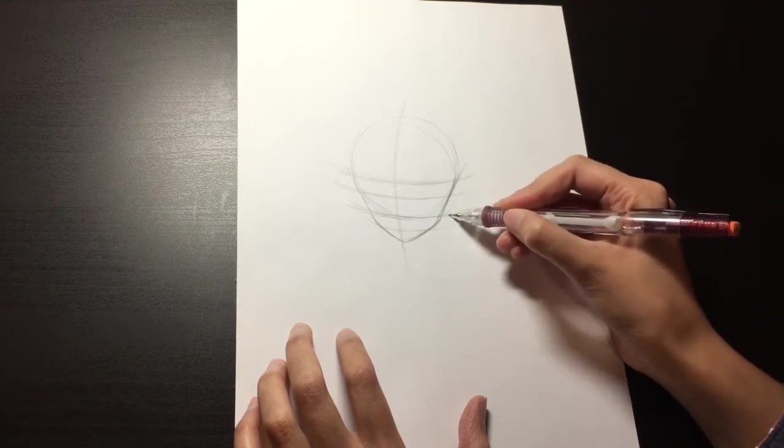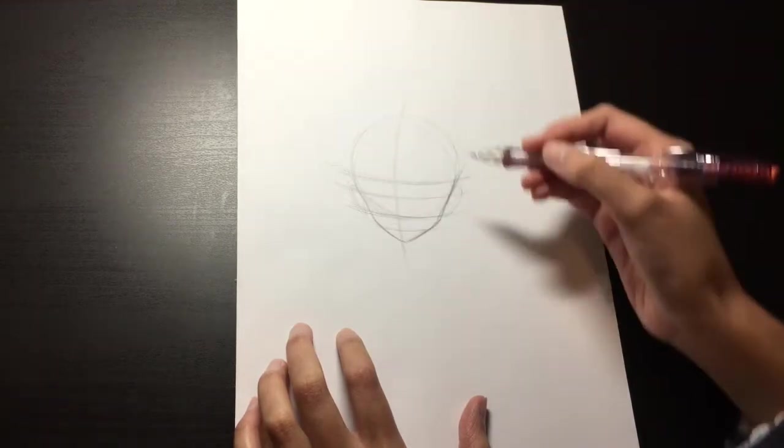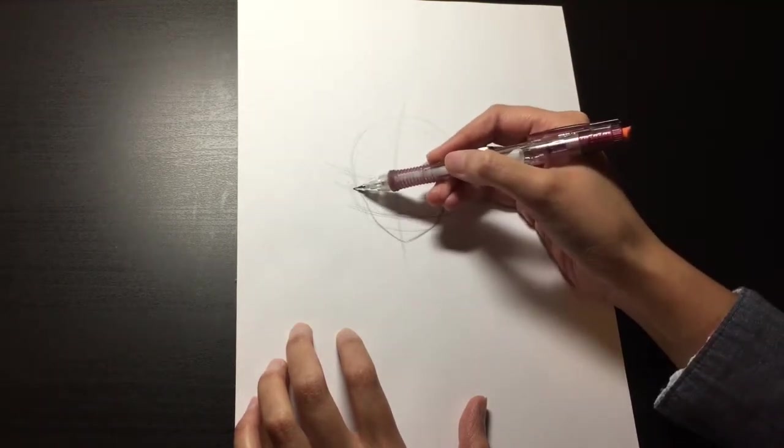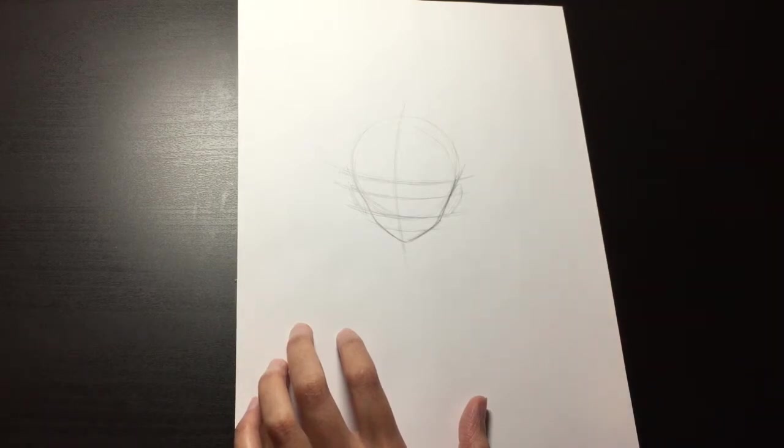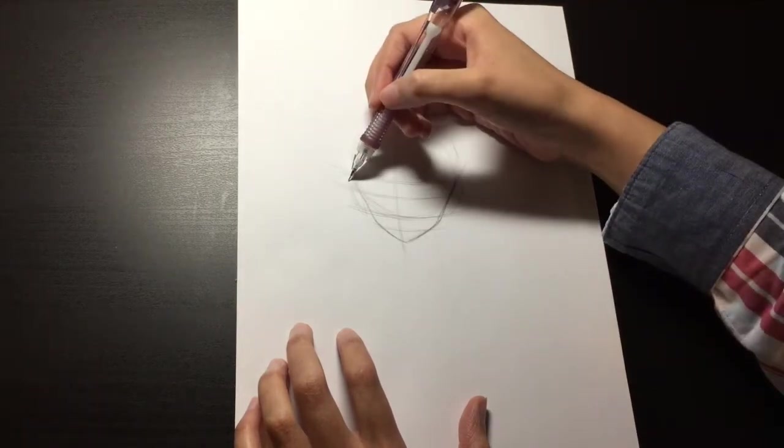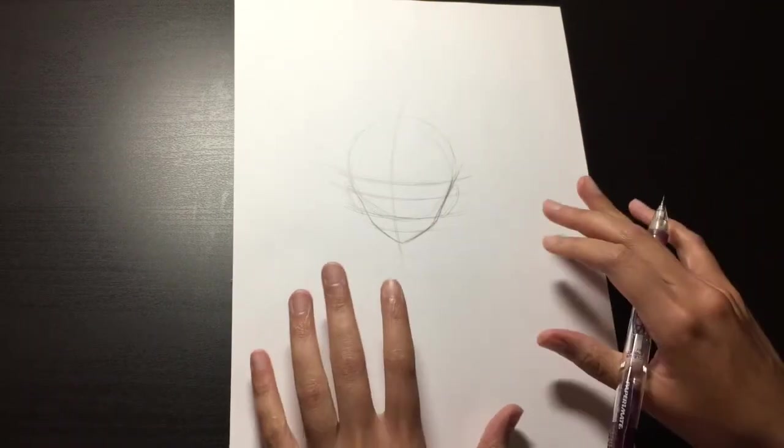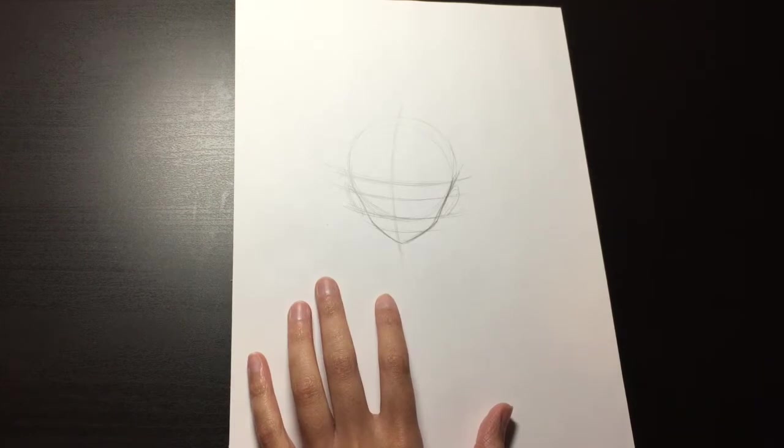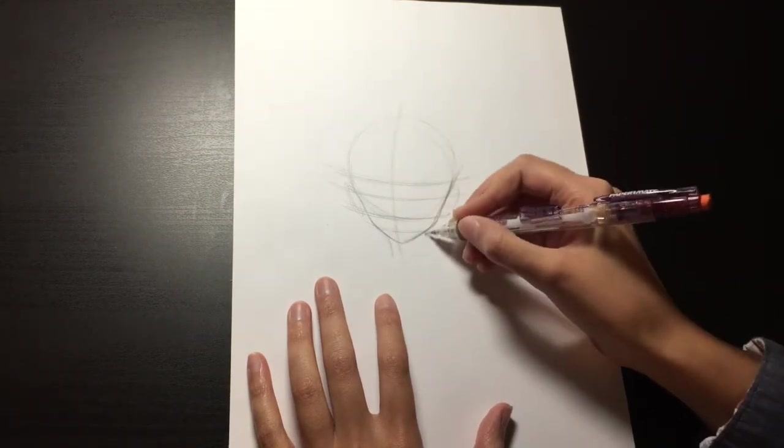Then I'm going to roughly sketch in two circles between these two lines here. And then just for reference, sketch in the neck.